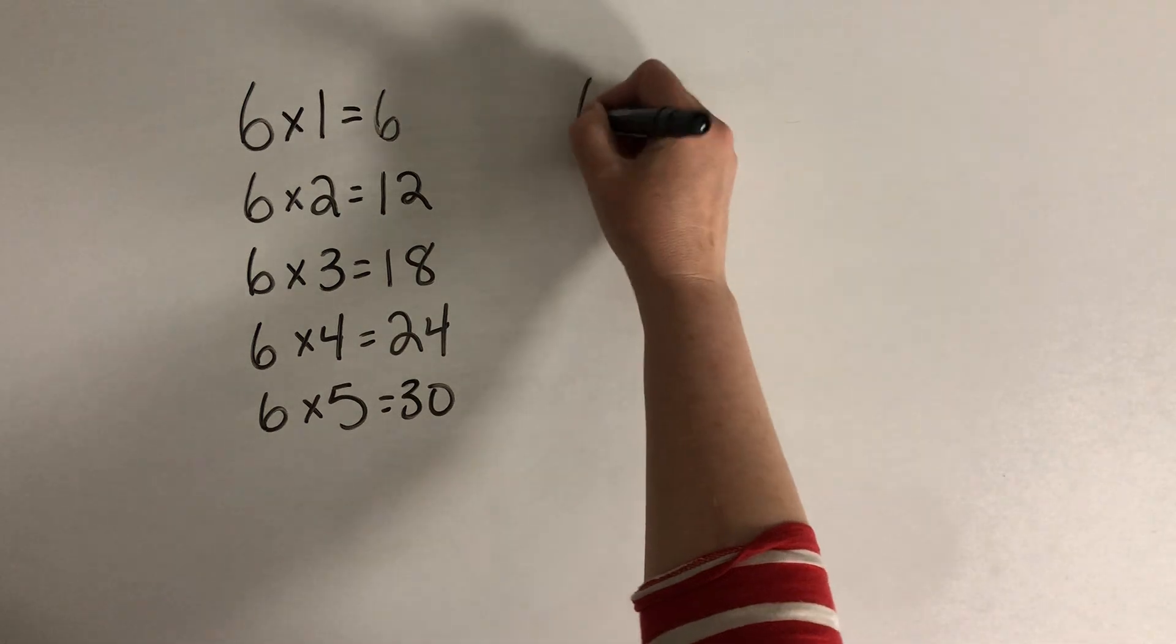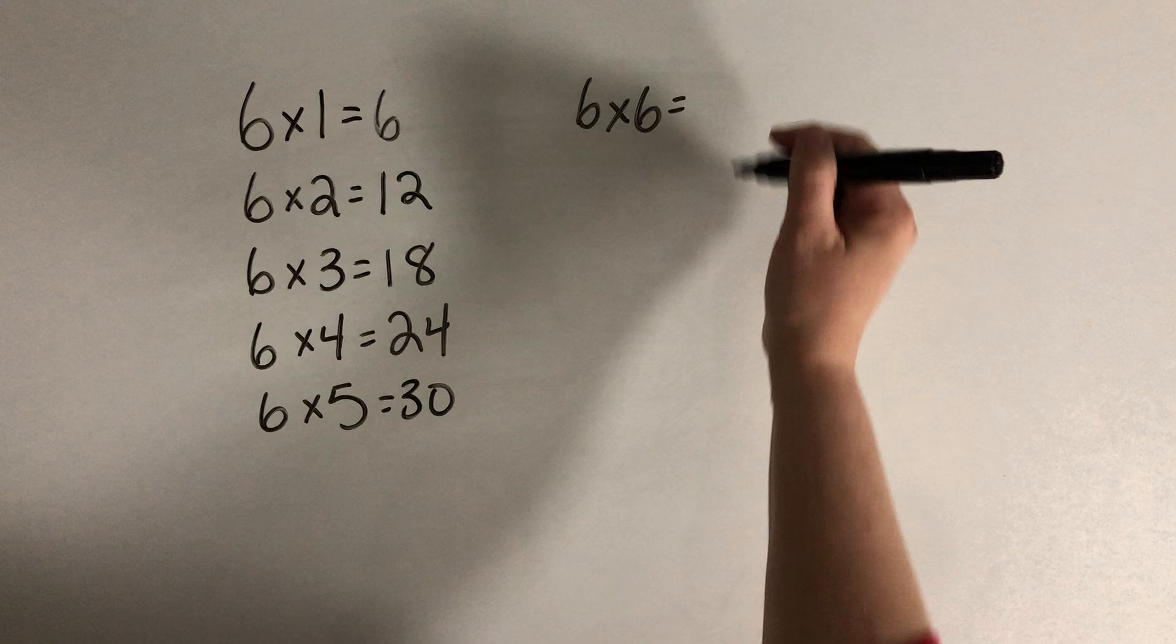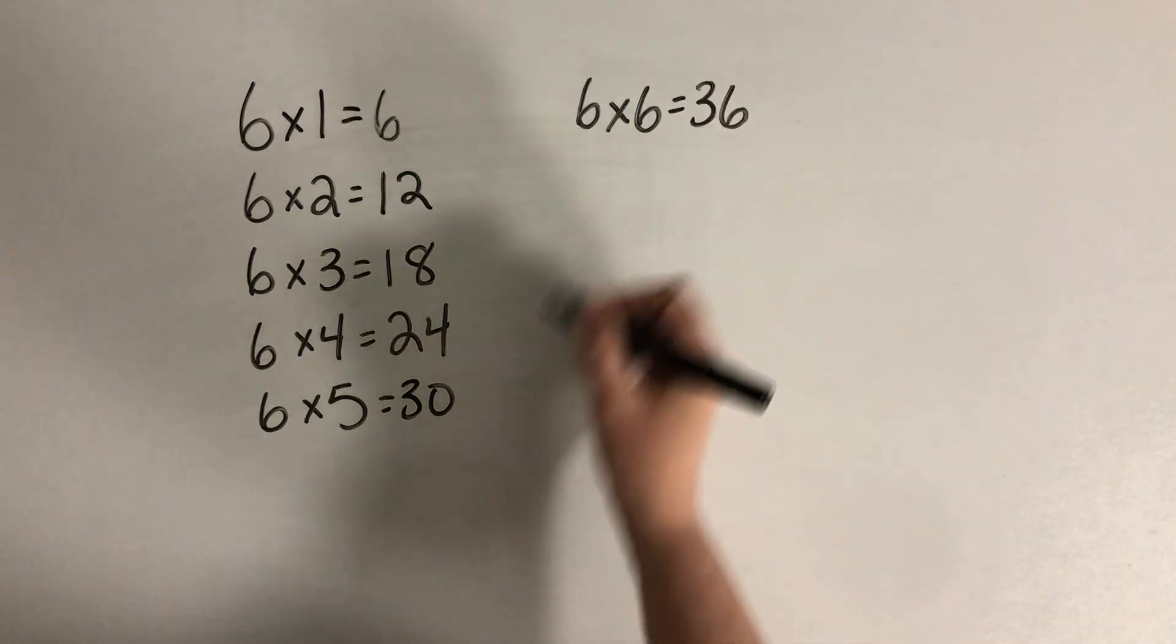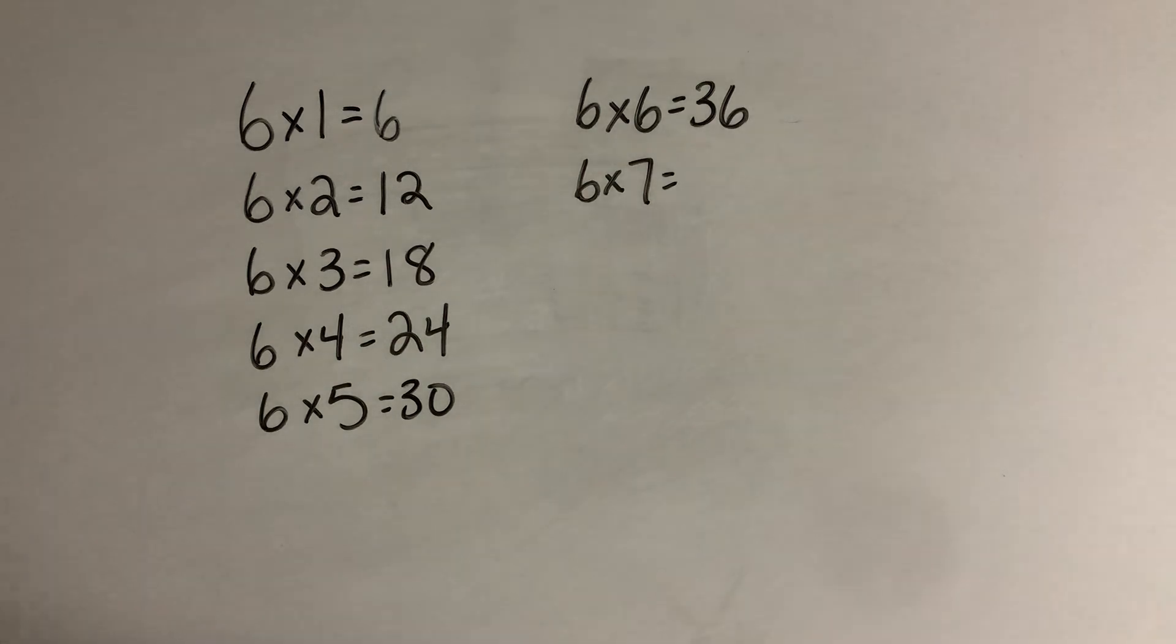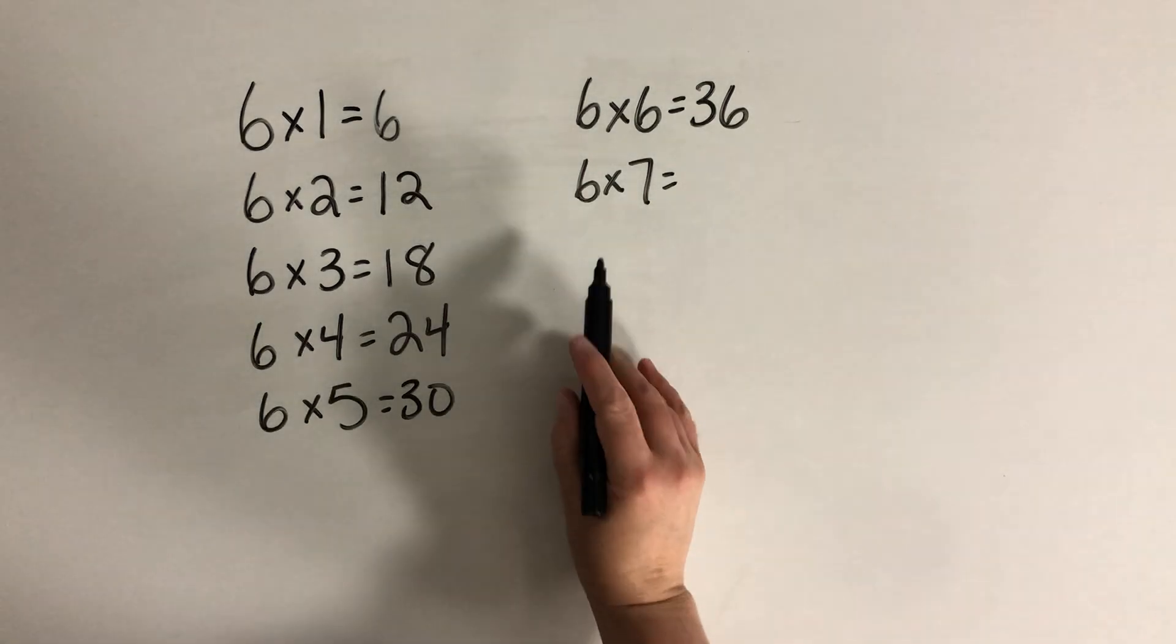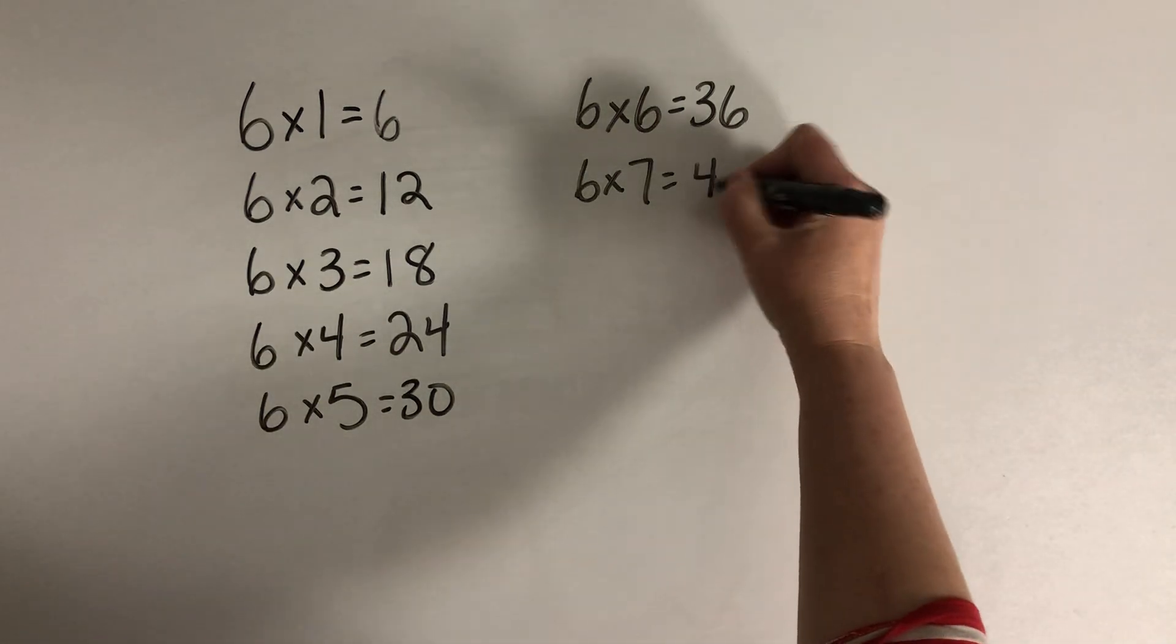Now 6 times 6, I remember that from when I learned the square facts. A 6 by 6 array makes a perfect square, and that was 36. 6 times 7, what could I think for this one? Well, I might think to myself, I know that 5 groups of 7 makes 35. And then I'll just add one more group of 7 to make 42.